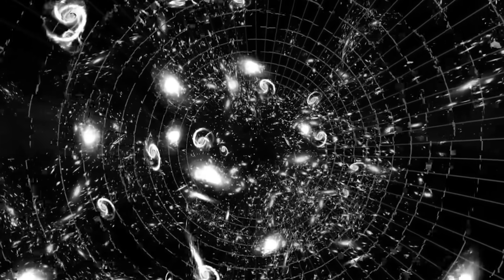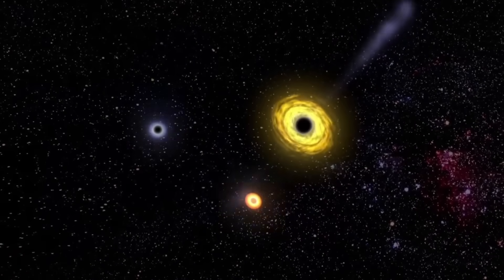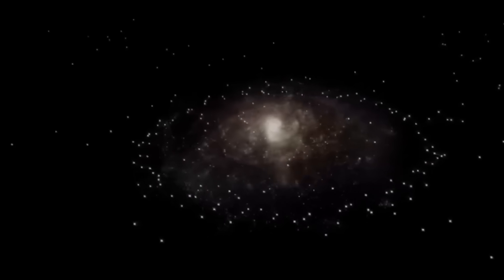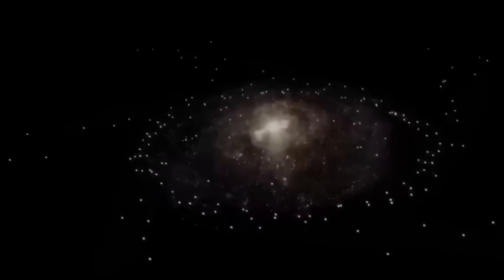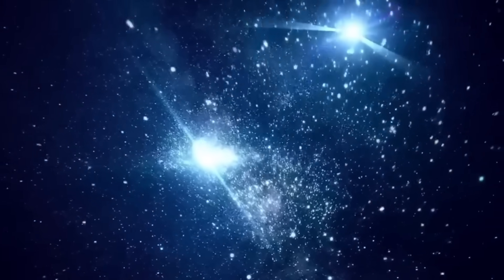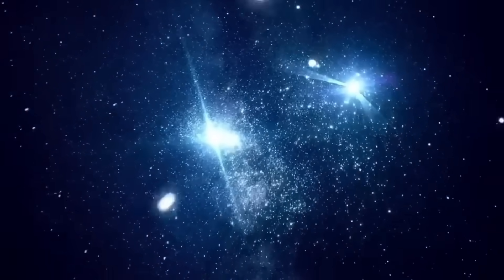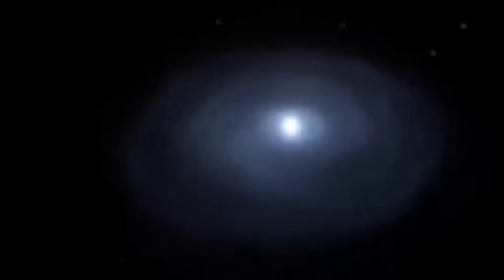What Webb began to uncover, layer by layer, photon by photon, was a universe that doesn't match our equations. It was as if the cosmos was playing a different game all along. Galaxies formed too quickly, structures too advanced appeared too early.